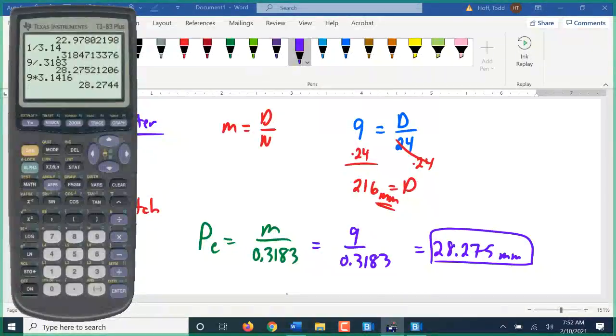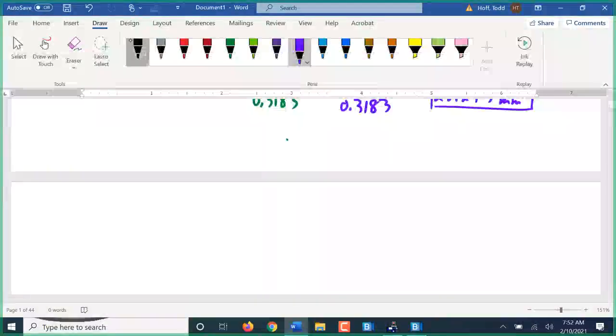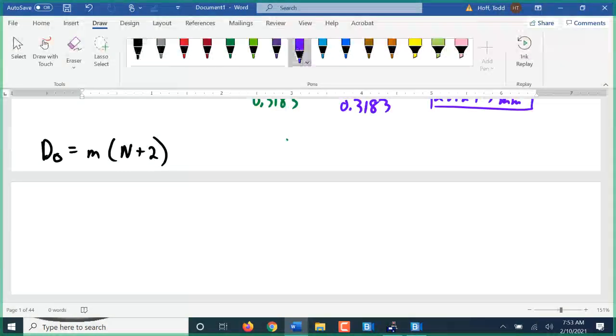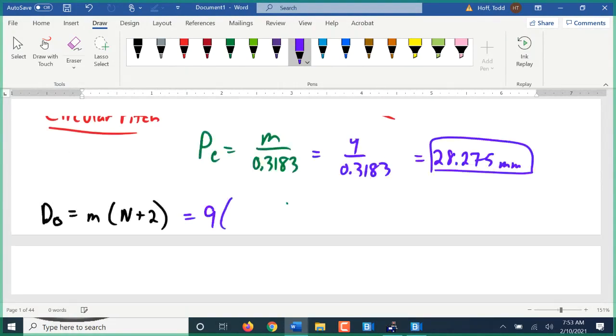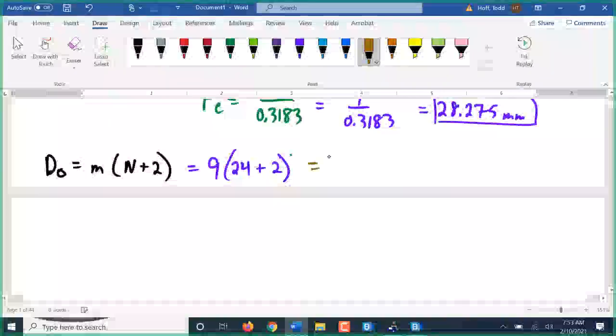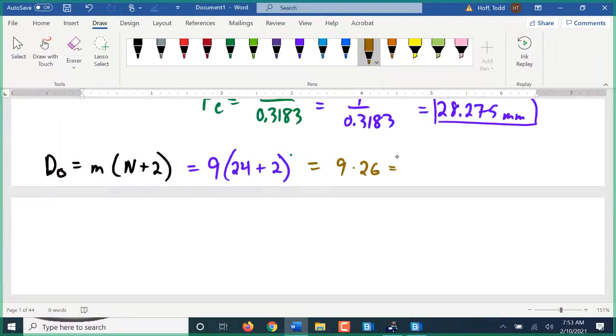So anyway, the next thing we want to look for, let's say we want the outside diameter. If I look back on my table, outside diameter dO is the module times N plus 2. This is the standard. The outside diameter is just what you would get if you add two more teeth. Our module is 9, we had 24 teeth. So that's 9 times 26, which gives us 234 millimeters.